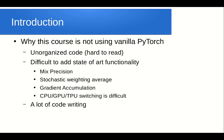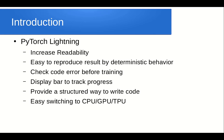However, this course is not using Vanilla PyTorch, because Vanilla PyTorch has unorganized code which is difficult to read. It is also difficult to add state-of-the-art functionality such as mixed precision, stochastic weighted averaging, and gradient accumulation — you have to write a lot of code, and everyone writes it in their own style. The solution is to use PyTorch Lightning, because it increases readability.